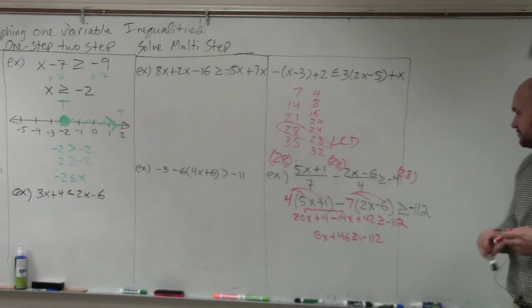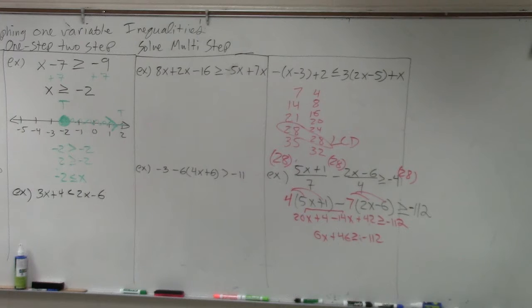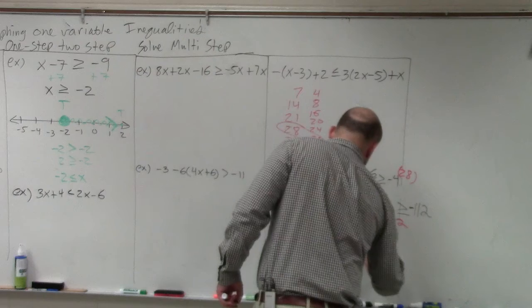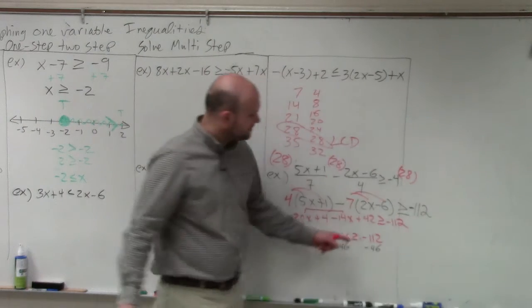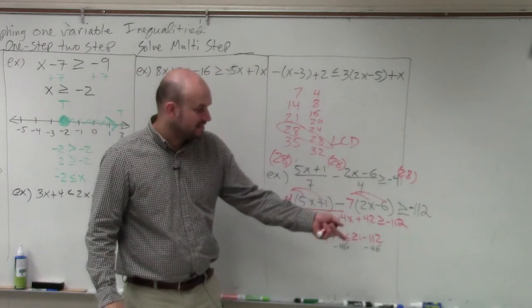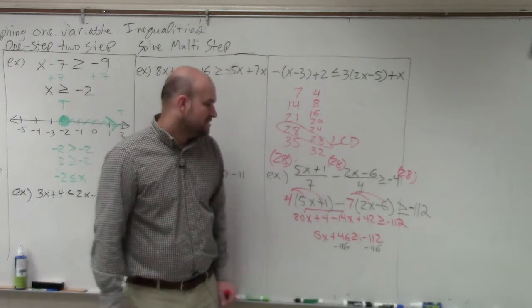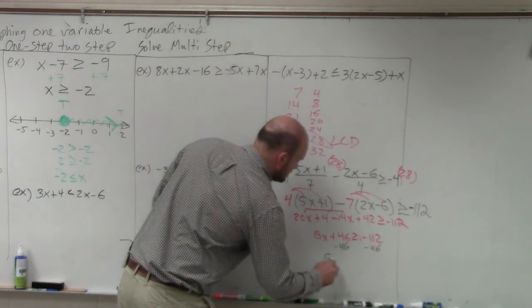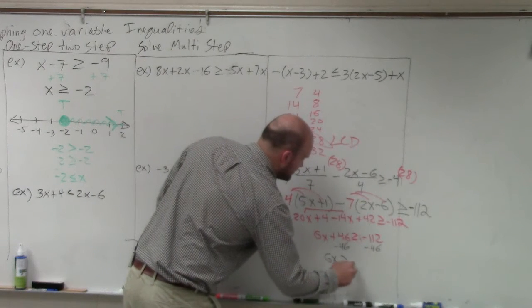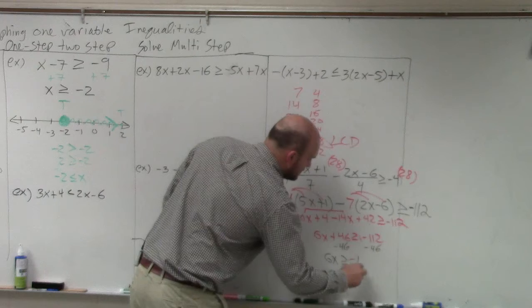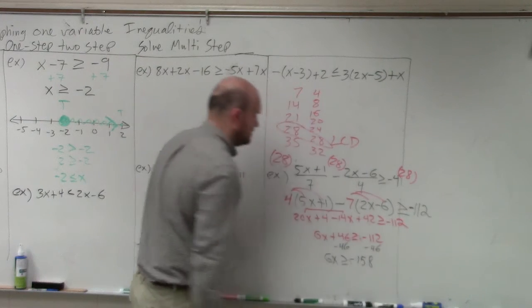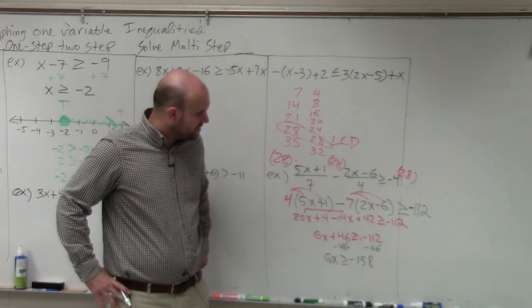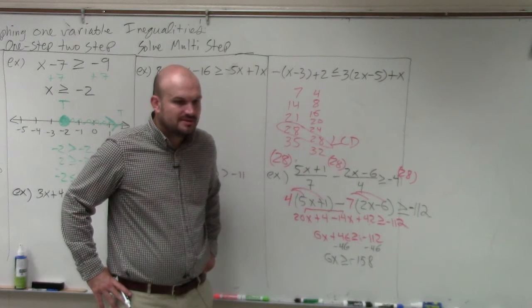Now, do you guys feel confident you can solve the rest of this? It's a little bit bigger numbers, but hopefully you should be able to do this. So therefore, I'm going to minus 46. Minus 46. Basically, when you have a negative number minusing another number, it's like adding it. So that's going to be 158. 6x is greater than or equal to negative. Let's do 60, 120, 180.